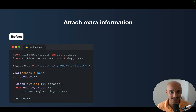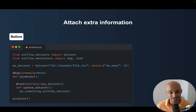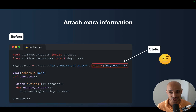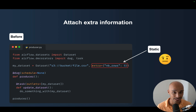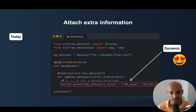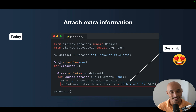Something else you can do with datasets is attach extra information. For example, you might want to add the number of rows to a dataset 'file.csv'. However, attaching this extra information statically is not very useful. What if you want to attach extra information at runtime — like the actual number of rows after reading the file? In Airflow 2.10, you can do that. You just use the outlet events from the Airflow context as a parameter of your task, then from the outlet events refer to your dataset, use .extra, and pass the extra information dynamically.